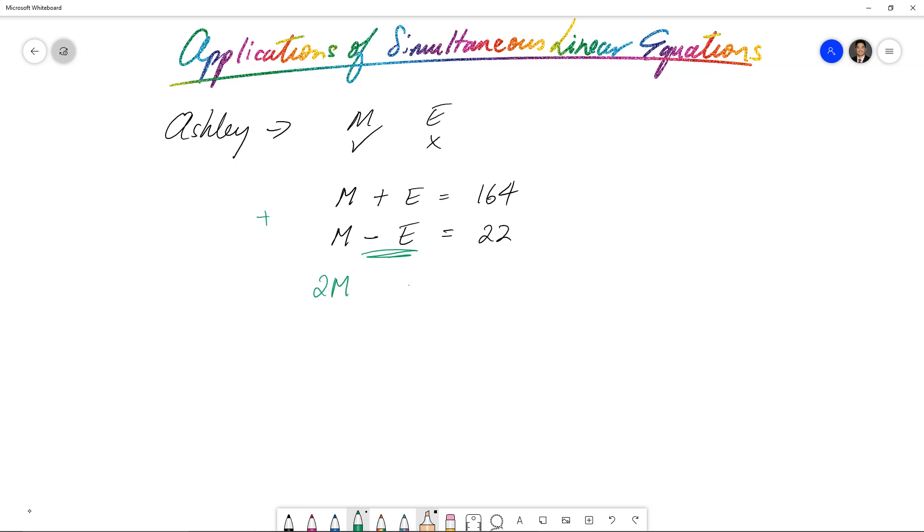So we've got 2M is equal to 186. So that means the math score for Ashley should be half that, should be 93 marks.